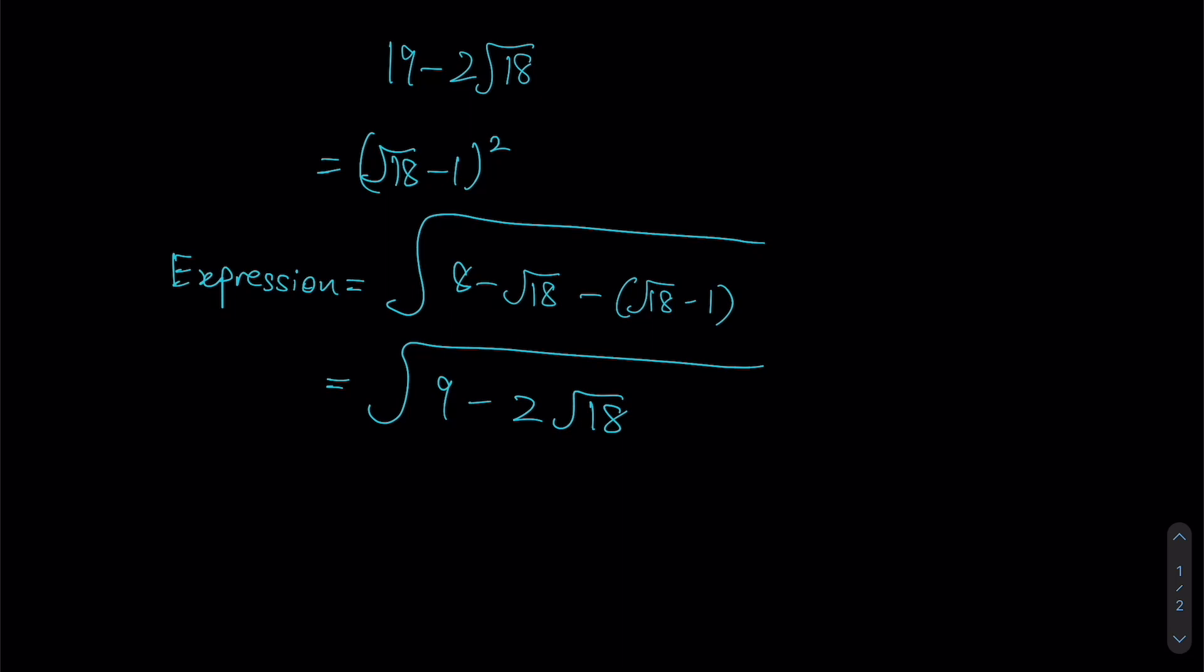Yet again, we want to try and use our identity. Seeing as the negative sign is still there, we are still going to be using our form of a squared minus 2ab plus b squared, since this is a minus b squared expanded. Again, this time a squared plus b squared is equal to 9 over here, whereas ab is still going to be equal to root 18.